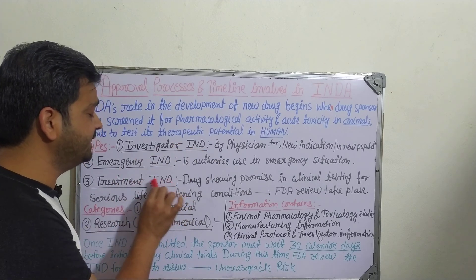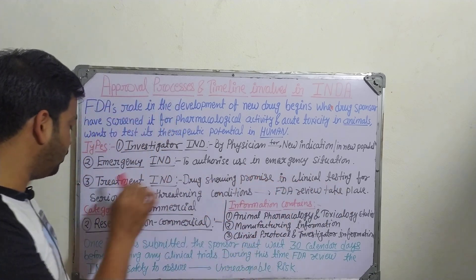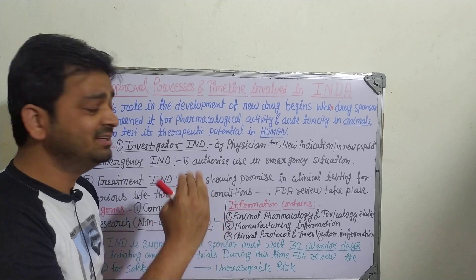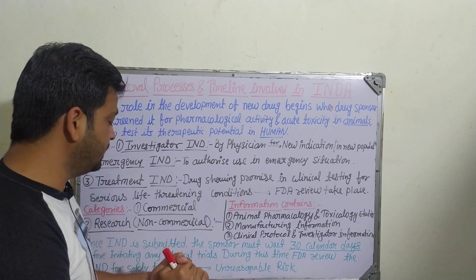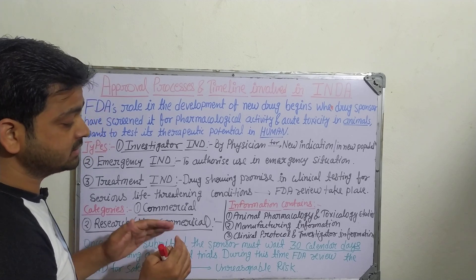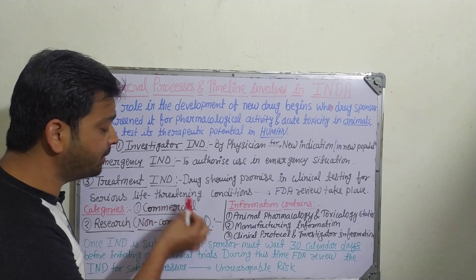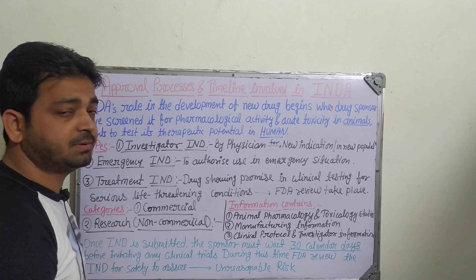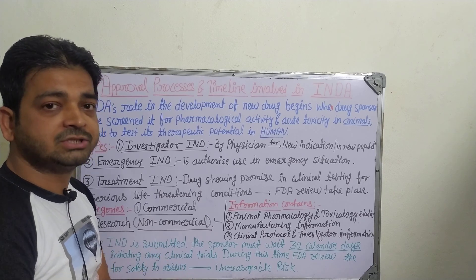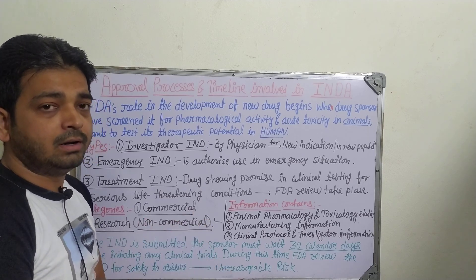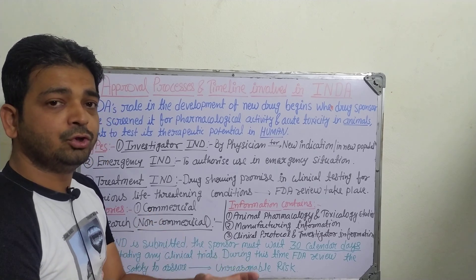The third type is the Treatment IND — for drugs showing promise in clinical testing for serious or life-threatening conditions. FDA review takes place and it will be approved. Generally, there are two categories of IND: the first is for commercial purpose and the second is for research purpose. In both cases, manufacturing is required.